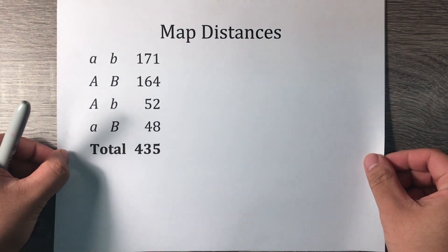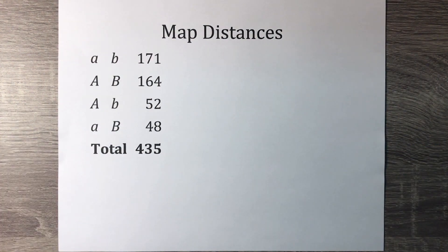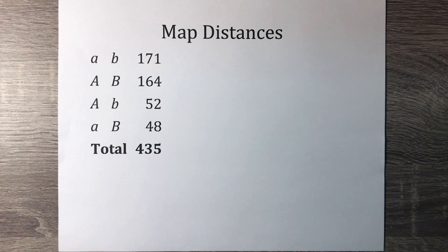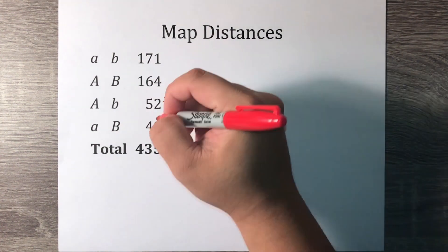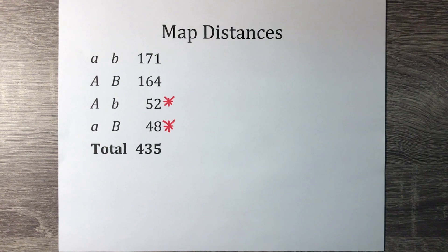To understand how to calculate the map distance between linked genes, let's first examine a two-gene case. Let's say we have genes A and B on a chromosome and we have the following data. The recombinant offspring due to crossing over will be significantly less than the normal offspring. We can see that progeny that have both wild-type alleles on one chromosome and both mutant alleles on the other chromosome occur in greater numbers than progeny that have one wild-type allele and one mutant allele on both chromosomes.